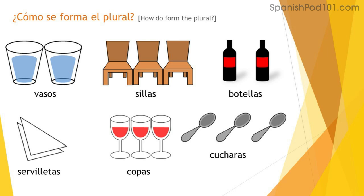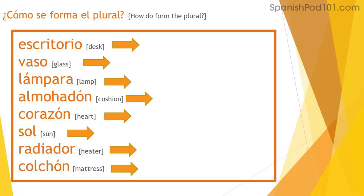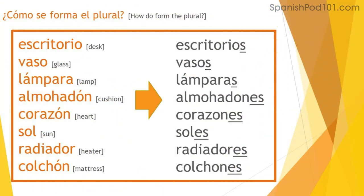Let's do another exercise — transform these words into their plural form. Answers: escritorio → escritorios, vaso → vasos, lámpara → lámparas, almohadón → almohadones, corazón → corazones, sol → soles, radiador → radiadores, colchón → colchones. Muy bien, muy buen trabajo! That's all for today — muchas gracias por ver la clase, y nos vemos en la próxima.